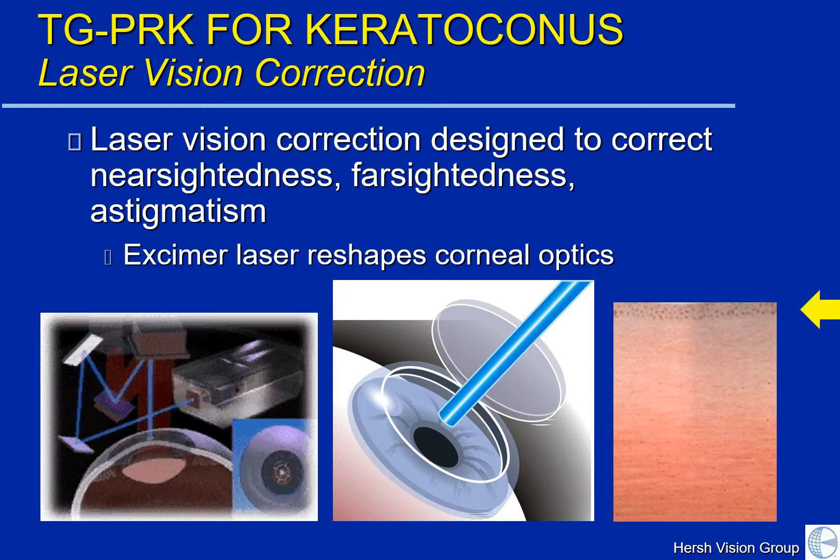In the LASIK procedure, as shown in the center picture here, we first make what's called a corneal flap to maintain the surface cells for fast healing. In the PRK procedure, as you see on the right side, we remove the surface epithelial cells, and they heal in afterwards.